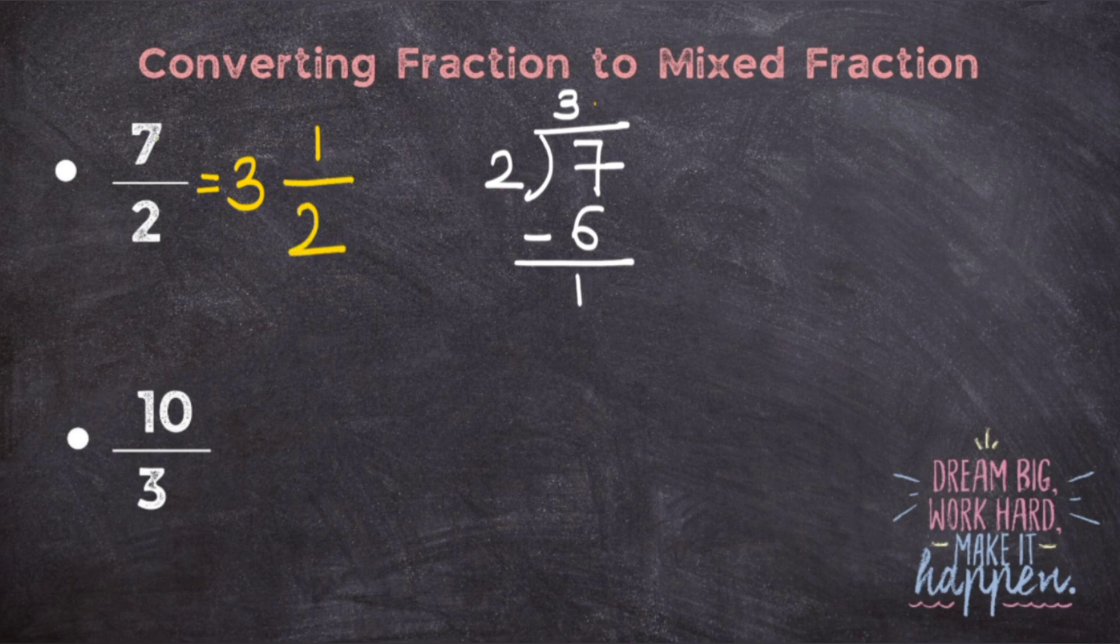So the mixed fraction for the given fraction 7 upon 2 will be 3 and 1 upon 2. Same way we are going to find the fraction for 10 upon 3. So simply just divide 10 by 3.